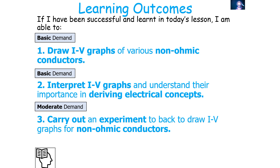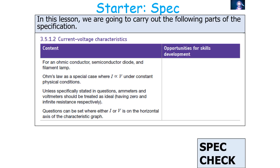If we've been successful in today's lesson, we should be able to draw IV graphs of different non-ohmic conductors, interpret the IV graphs and understand their importance in deriving electrical concepts, and understand how to carry out an experiment to draw IV graphs of non-ohmic conductors. We're going to be looking at AQA A-level physics specification 3.5.1.2: current voltage characteristics.